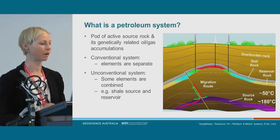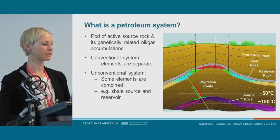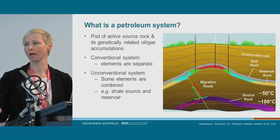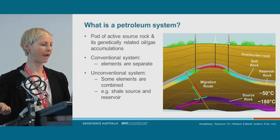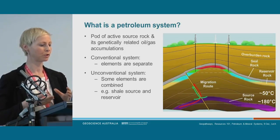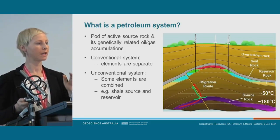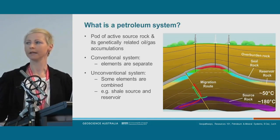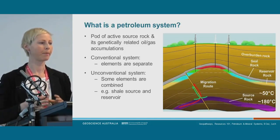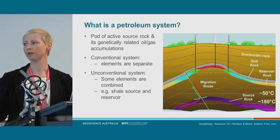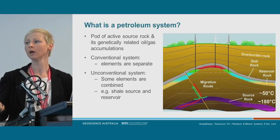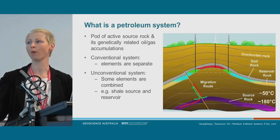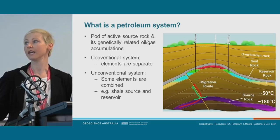Petroleum systems have a pod of active source rock at the bottom, genetically related to the oil and gas accumulations. In conventional systems all the elements are separate. The source rock has been buried by sediment, compacted, and turned into rock. If it's buried to the right temperature and has the right pressure, we start to mature the source rock and expel oil and gas. It's then able to migrate through porous rock into structures, if there is a seal over the top to keep it there for long geological time.